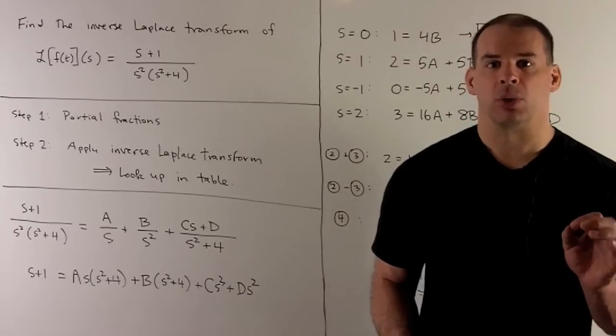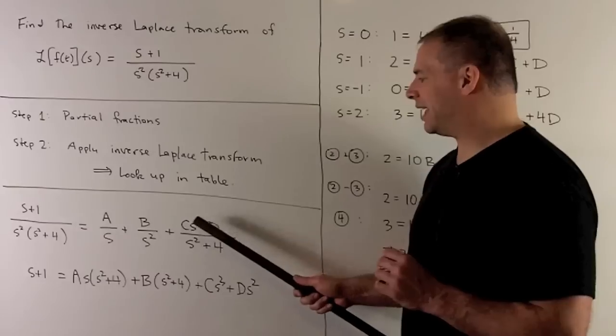Then, for the s squared plus 4, we're going to have to give it a term of the form Cs plus D.